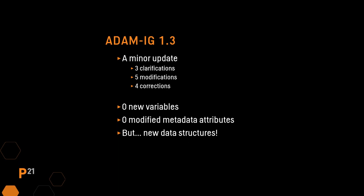Looking at the specifics of what's new with ADAM Implementation Guide 1.3, it really is just a minor update — a couple clarifications, a few modifications, and four corrections. All of these are very trivial and just add additional clarity to the guidance and examples to further convey the original purpose. The takeaway is that IG 1.3 has zero new variables and zero modified attributes for existing variables. However, we do have new data structures and subclasses.